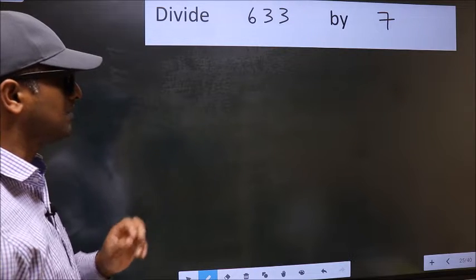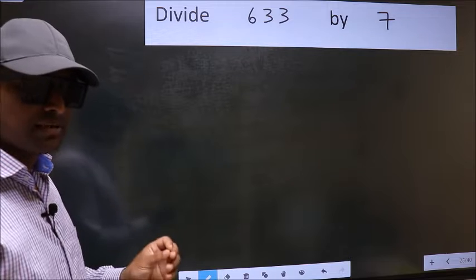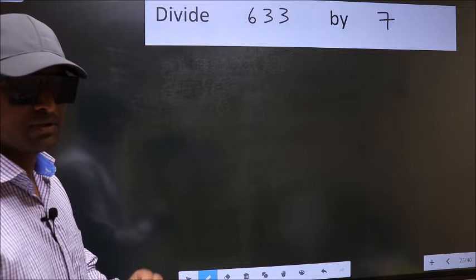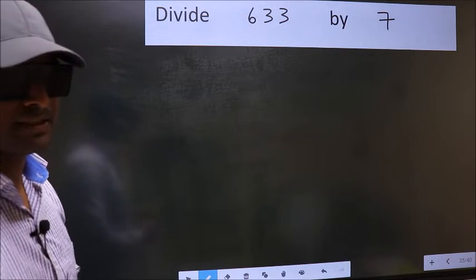Divide 633 by 7. While doing this division, many do this mistake. What is the mistake that they do? I will let you know. But before that, we should frame it in this way.